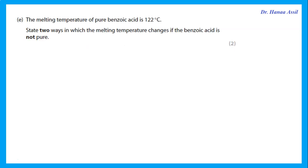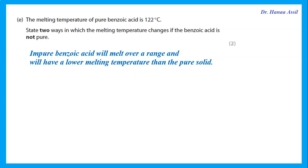The melting temperature of pure benzoic acid is 122°C. If the benzoic acid is impure, two changes occur: the solid melts over a range of temperatures (rather than sharply), and the melting temperature is lower than that of the pure compound. Impurities always lower and broaden the melting point of a solid.